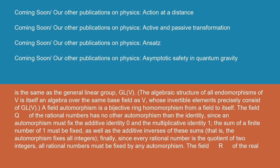A field automorphism is a bijective ring homomorphism from a field to itself. The field Q of the rational numbers has no other automorphism than the identity, since an automorphism must fix the additive identity 0 and the multiplicative identity 1. The sum of a finite number of 1 must be fixed, as well as the additive inverses of these sums. That is, the automorphism fixes all integers. Finally, since every rational number is the quotient of two integers, all rational numbers must be fixed by any automorphism.